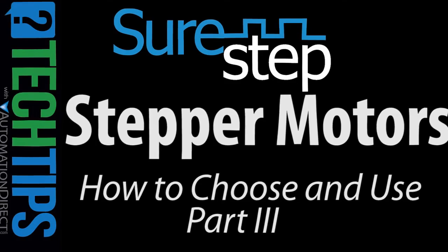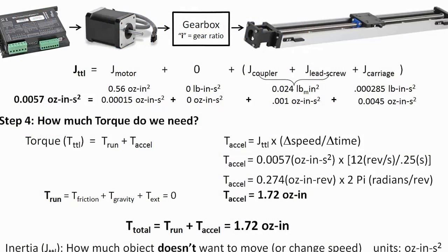Welcome back. In part 2, we calculated that it would take about 1.7 ounce-inches of torque to move a 110 pound weight on this linear slide. When we did that, did we take into account real world issues like friction and other things that might cause additional drag on our system?